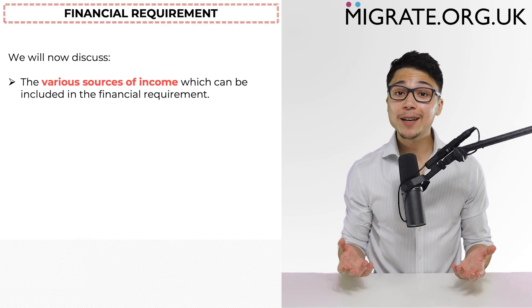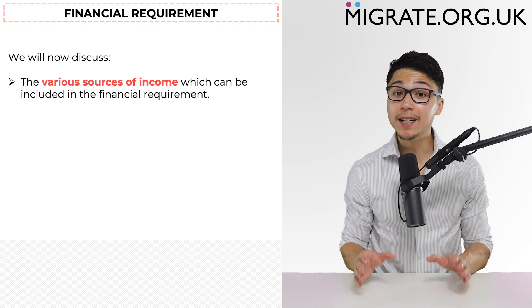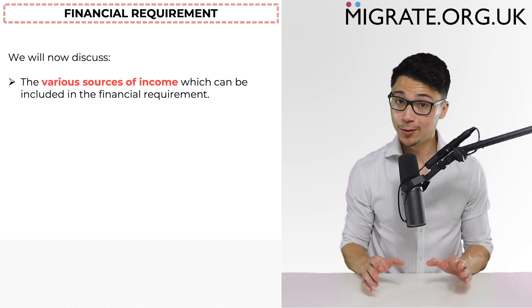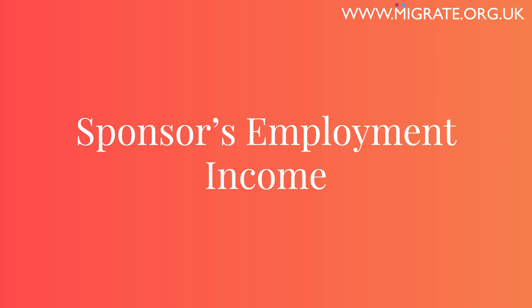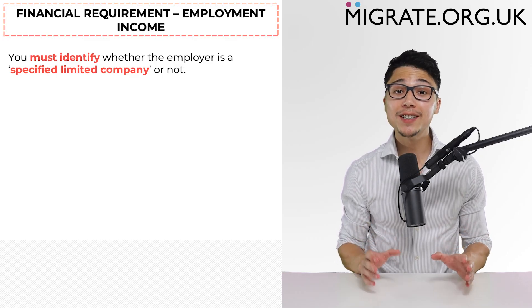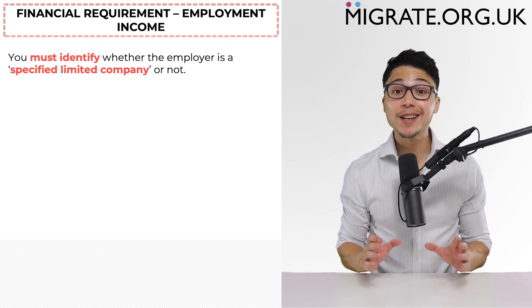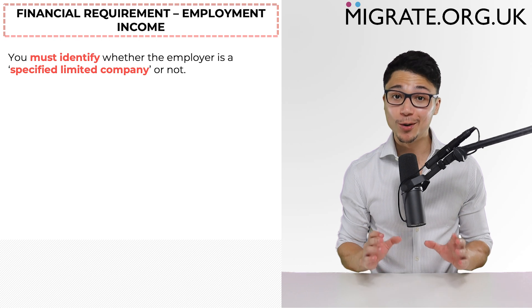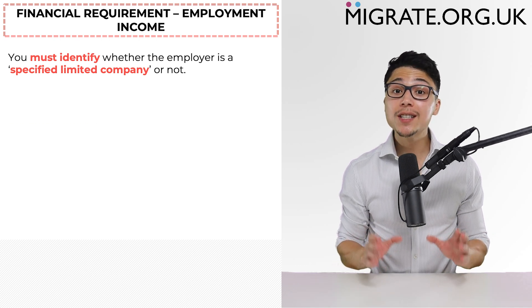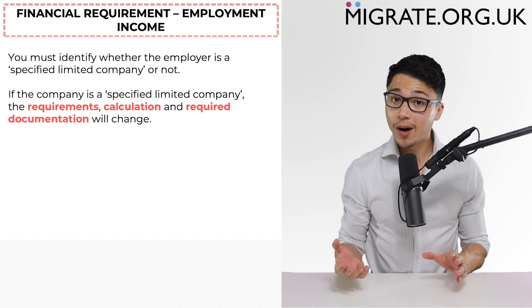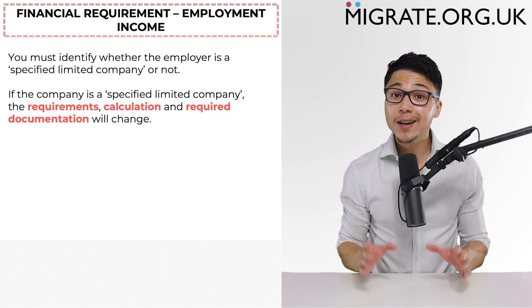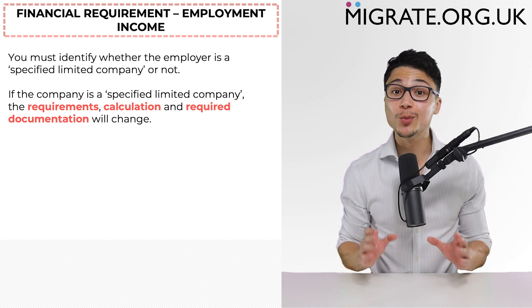So that was a discussion on how much income you will need to satisfy the financial requirement. Let's now discuss the various sources of permitted income that you can include, as well as how to calculate that income. Regarding the sponsor's employment income, the first step is to identify whether the employer is a specified limited company or not. This is important because if the company is a specified limited company, the requirements, calculation, and required documentation will change.